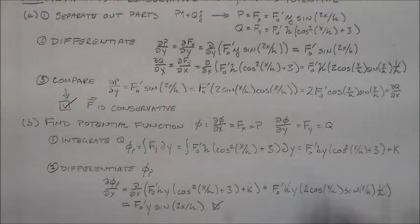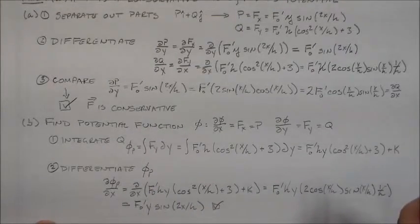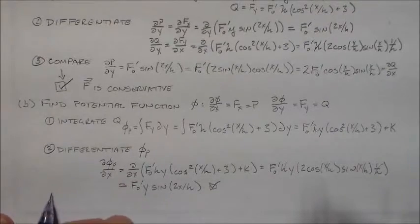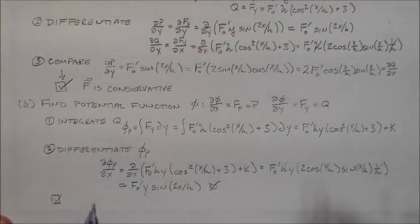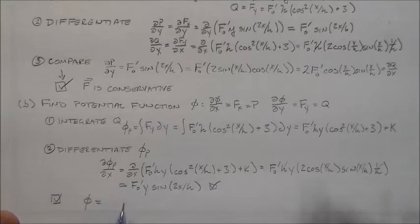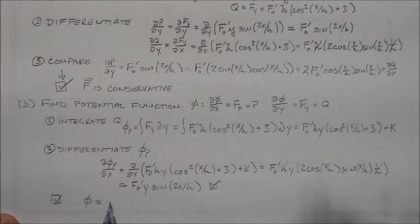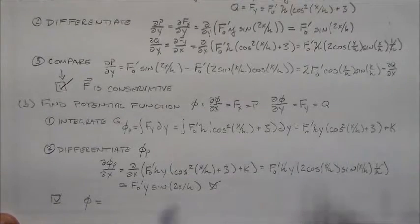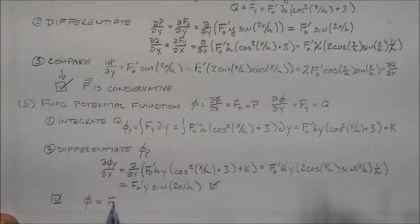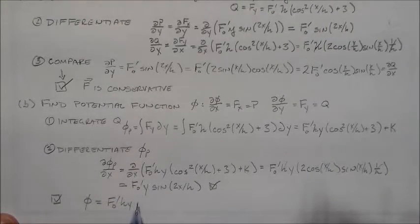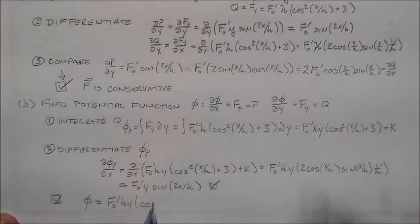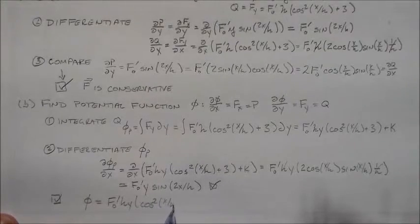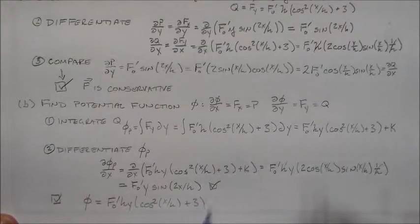So we can conclude that φ is equal to this guy here, f naught prime times h times y times cosine squared x over h plus 3 plus some k.